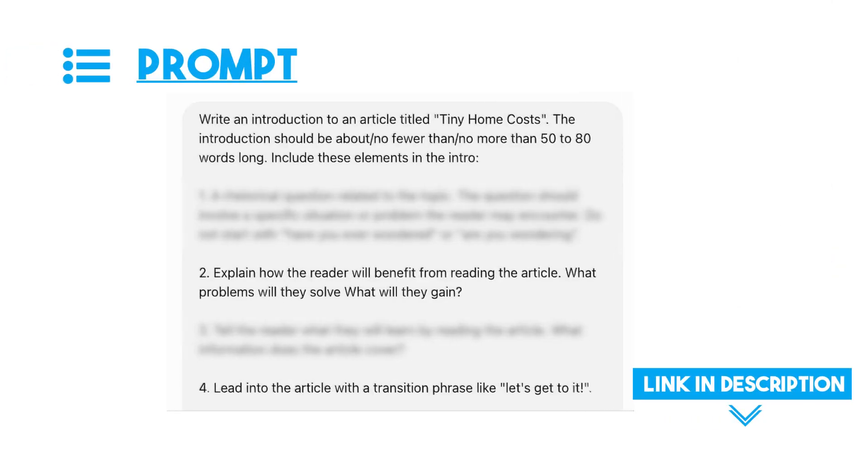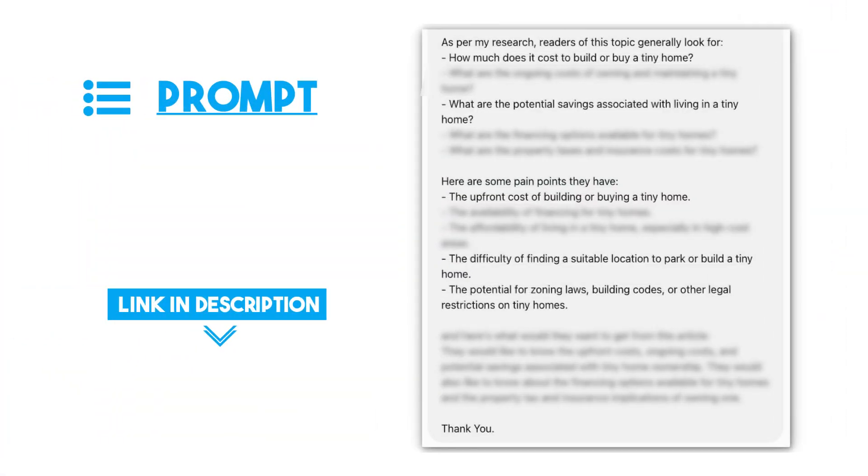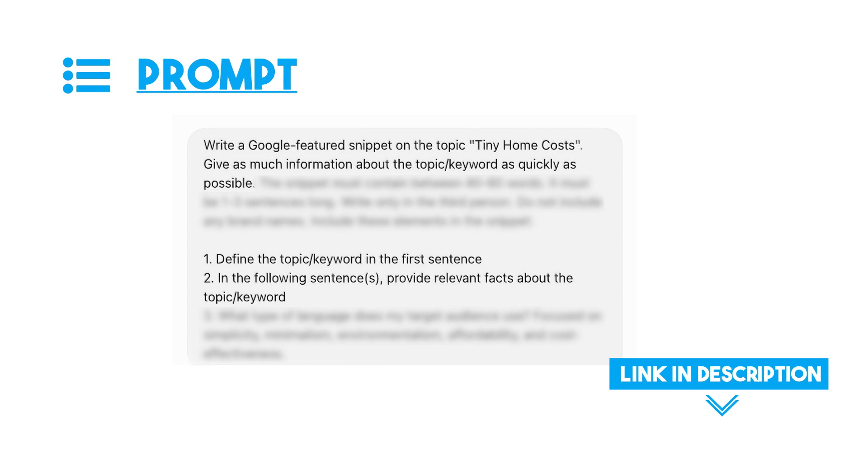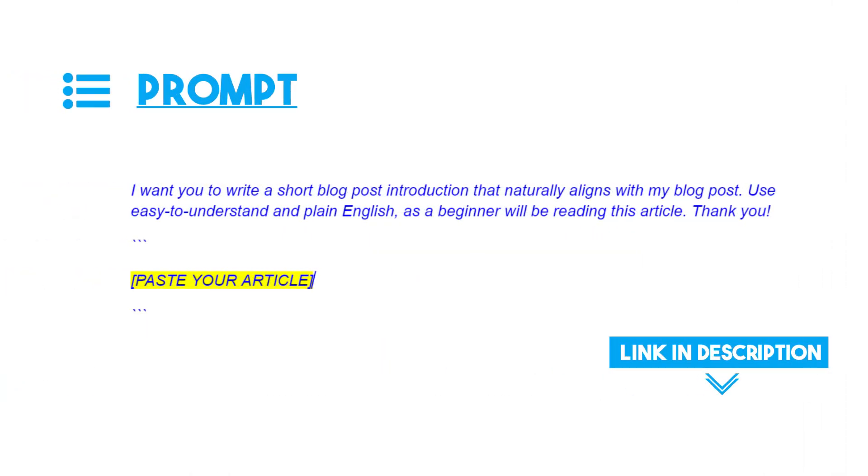Now it's time to write the intro. When writing an intro, make it concise and get straight to the point without beating around the bush. I try to explain the benefits of reading the article and preview what's to come in one or two sentences at most. Here's what the prompt looks like for my article on tiny home costs. There's also a trick: ask ChatGPT to write a Google featured snippet, and it will write better than the usual intro prompt.